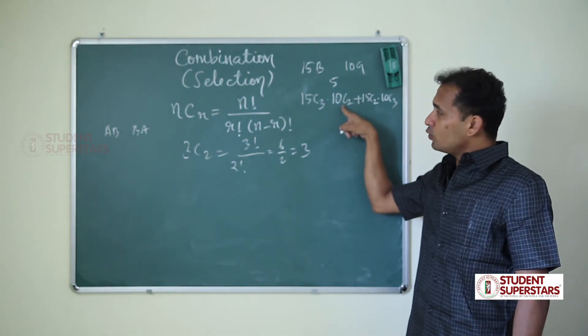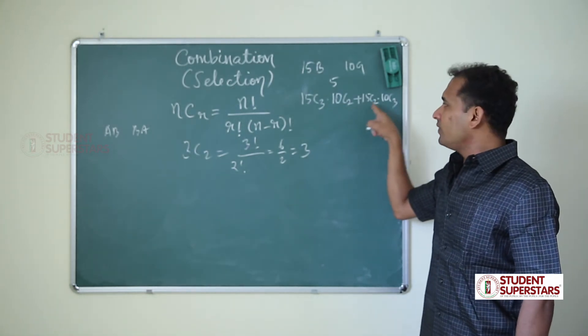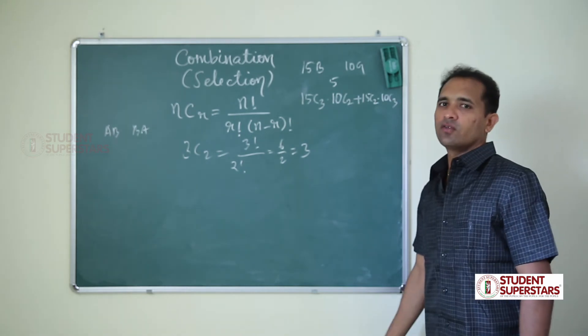Here, 15C3 into 10C2 - 3 plus 2 equals 5. Or 15C2 and 10C3 - 2 plus 3 equals 5. So this is combination.